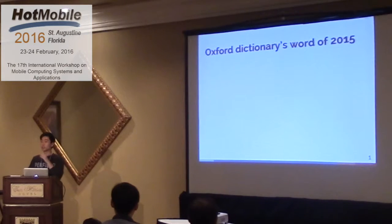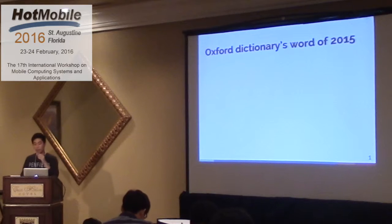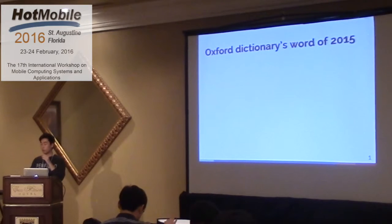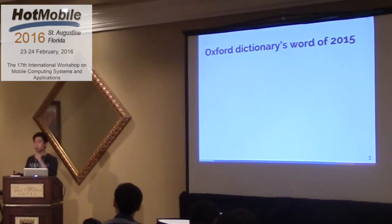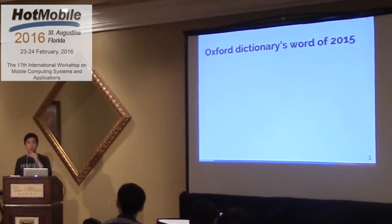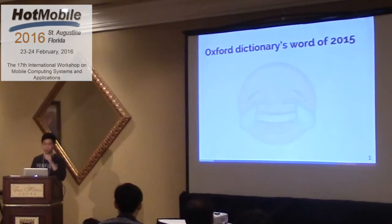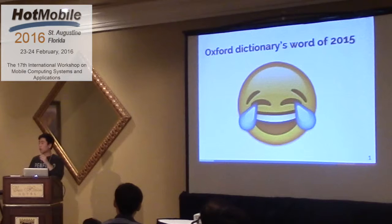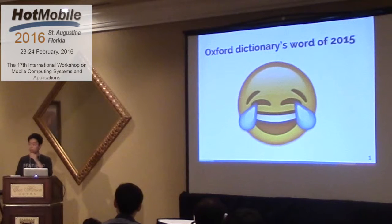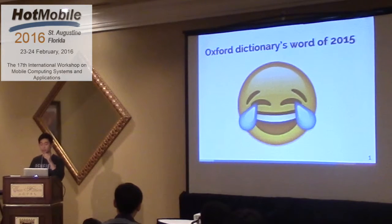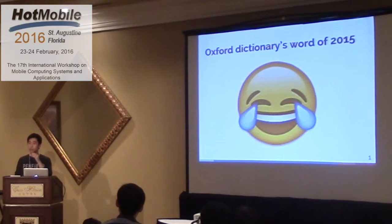Oxford Dictionary — the world's most famous dictionary — every year selects words that represent what happens and the most powerful words of the year. Do you know the word of last year, the word of 2015? Surprisingly, it's not a word. It's an emoji, it's emoticons. I think this means a lot of the conversations we make today are not exactly explainable using just plain text.